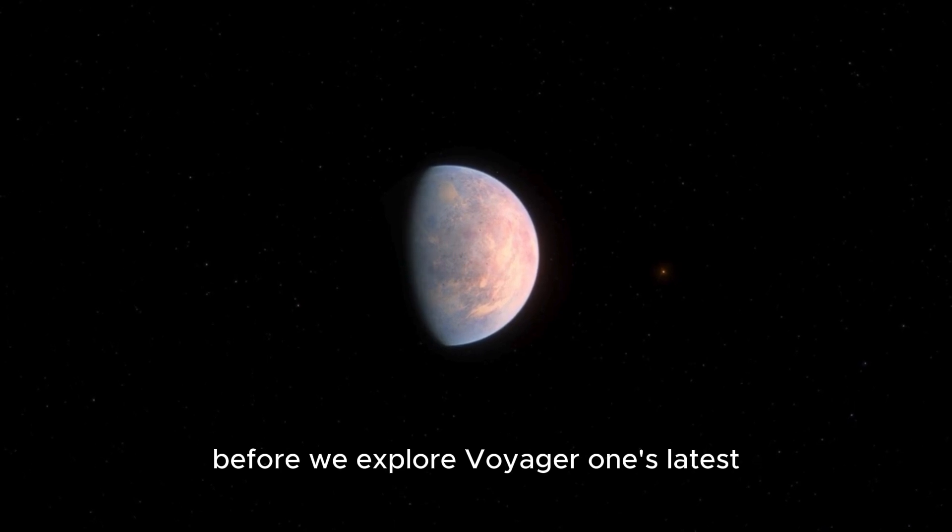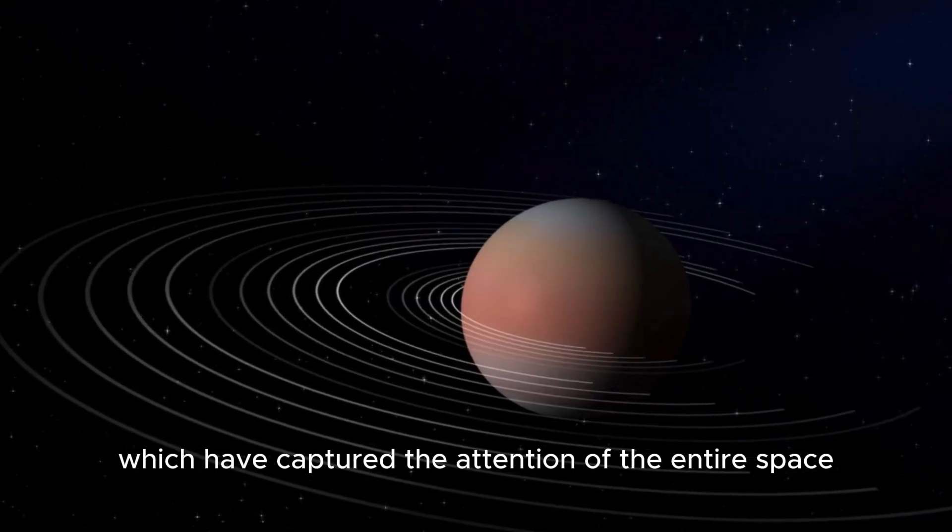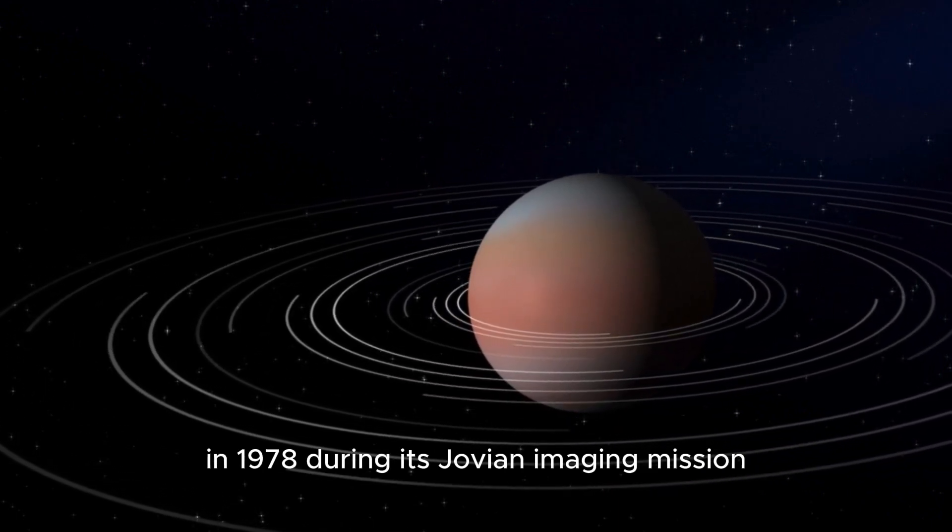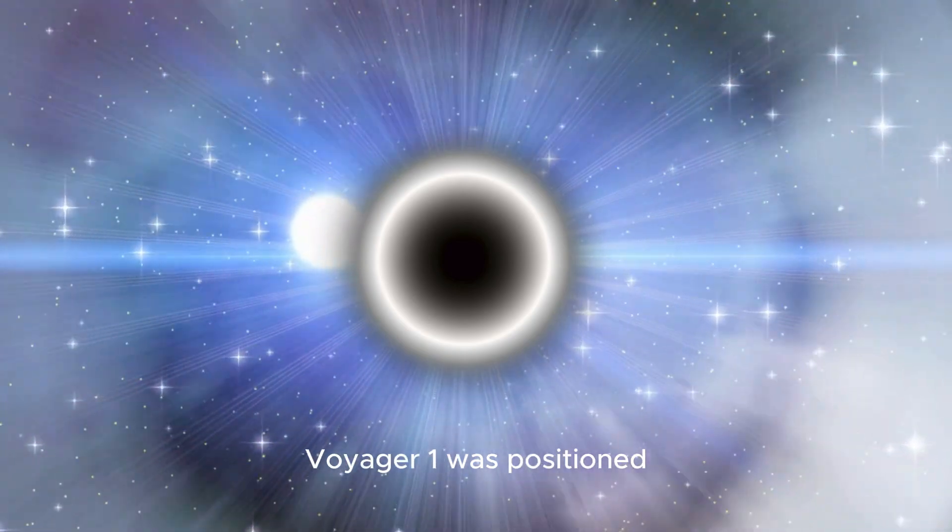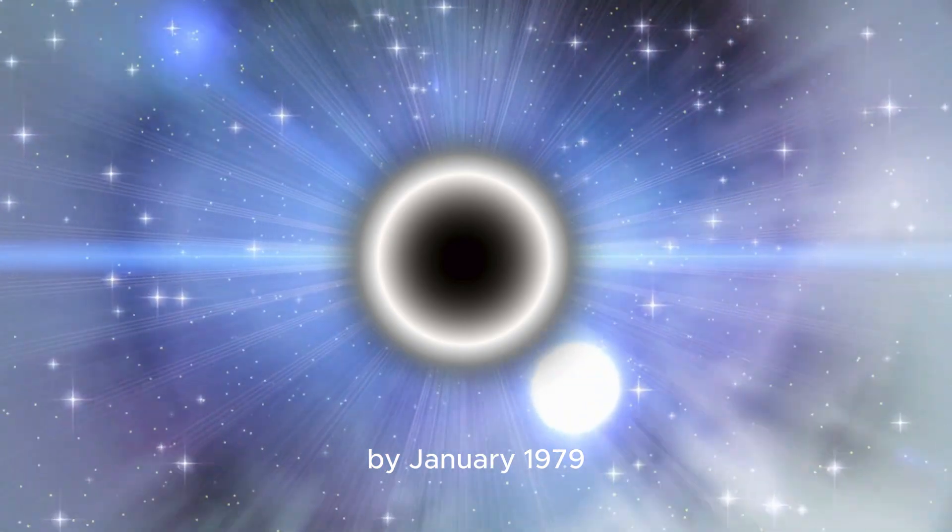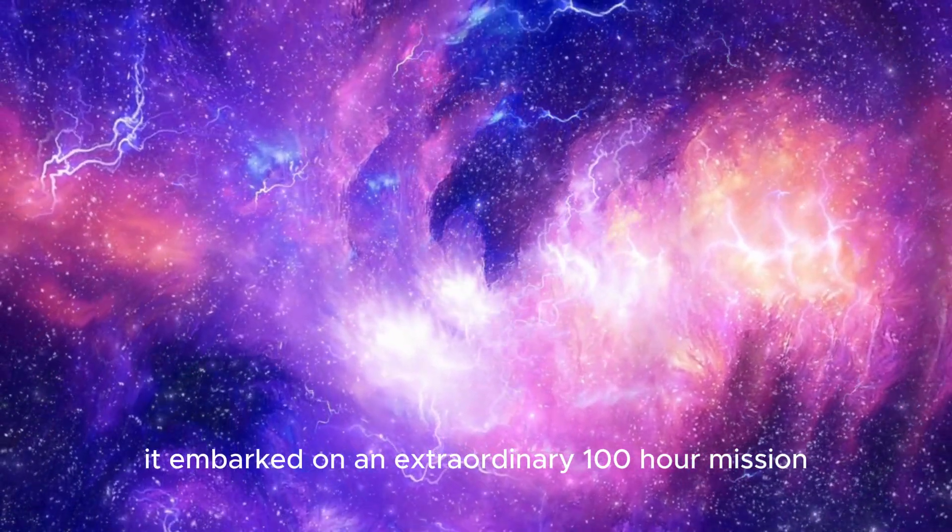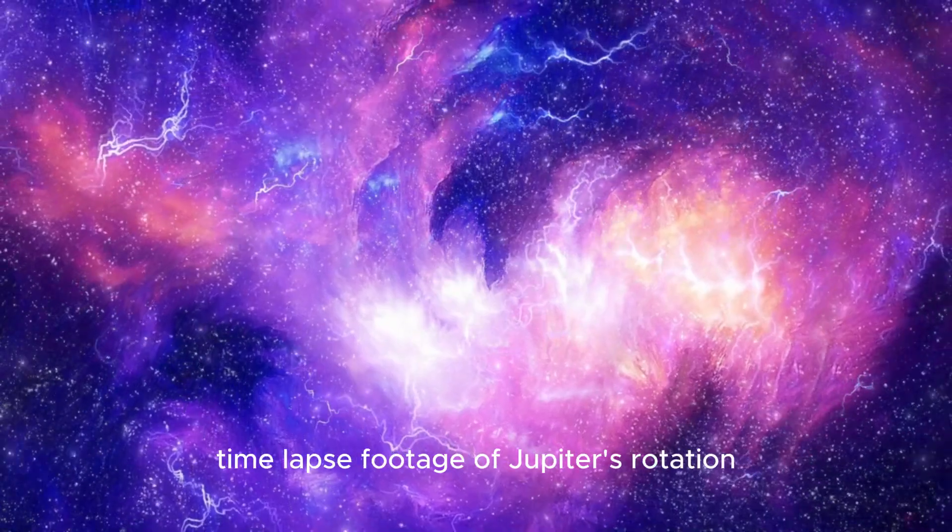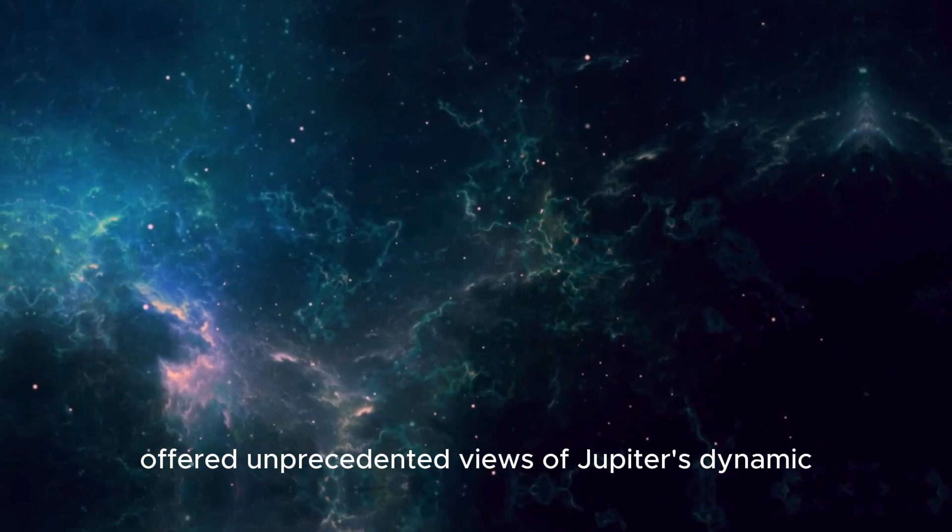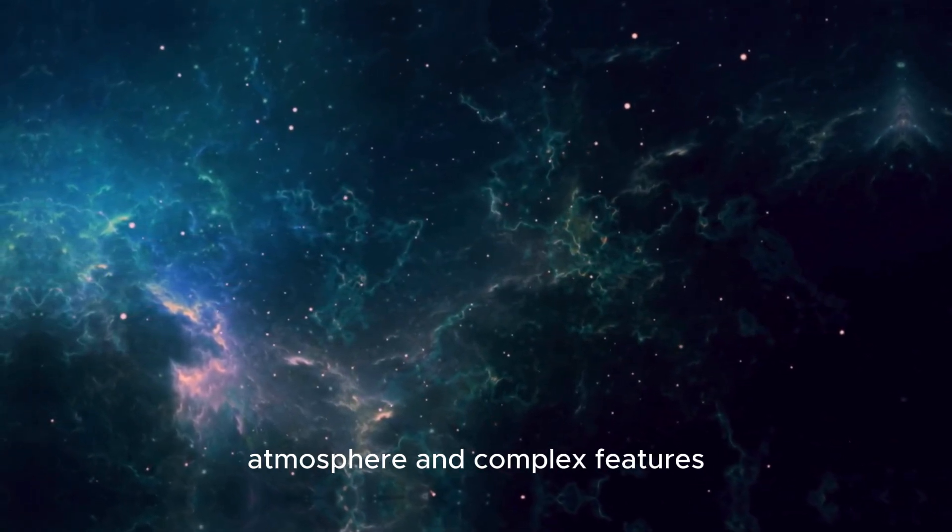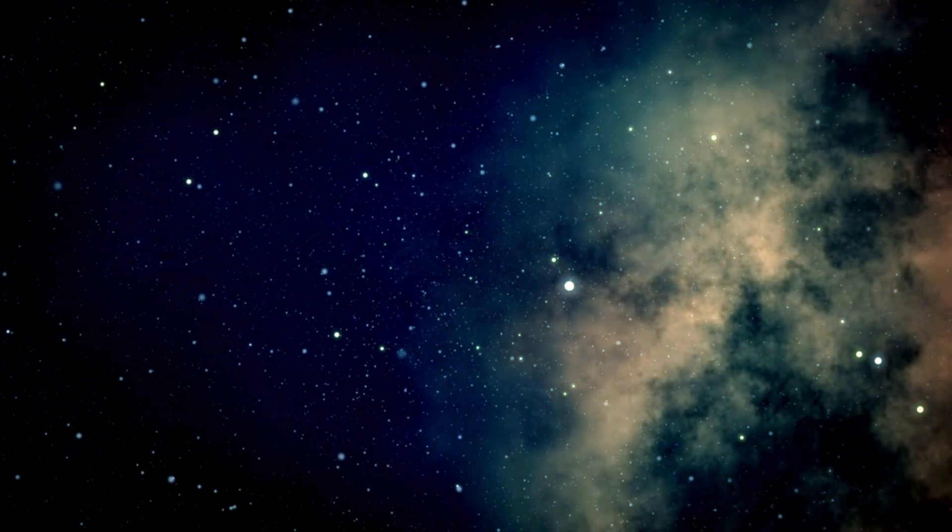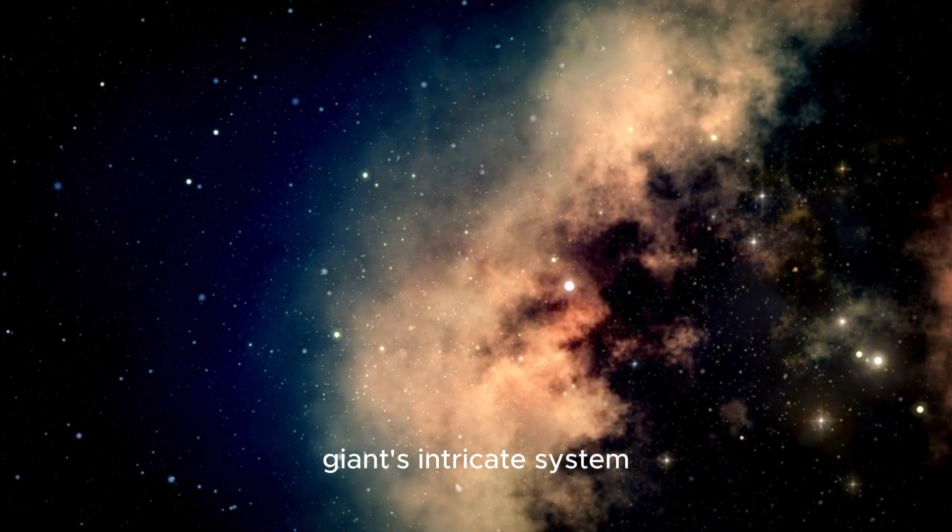Before we explore Voyager 1's latest astounding discoveries, let's revisit some of its most notable achievements. In 1978, during its Jovian imaging mission, Voyager 1 was positioned about 265 million kilometers from Earth. By January 1979, it embarked on an extraordinary 100-hour mission, capturing mesmerizing time-lapse footage of Jupiter's rotation. This series of 3,750 images offered unprecedented views of Jupiter's dynamic atmosphere and complex features, including the discovery of a faint ring around Jupiter and two previously unknown moons.